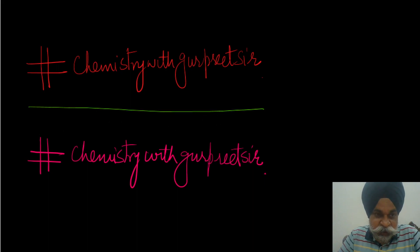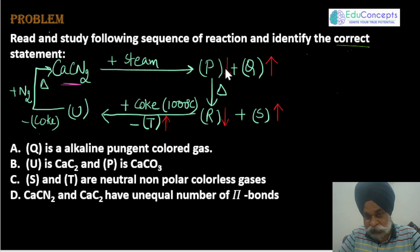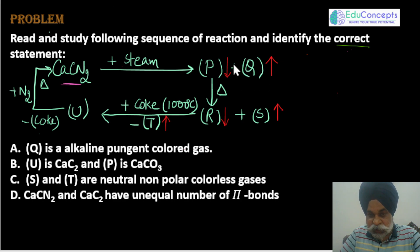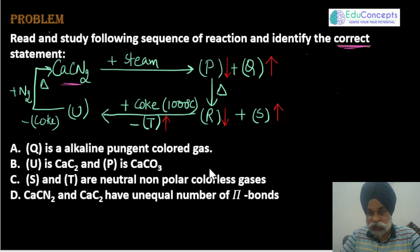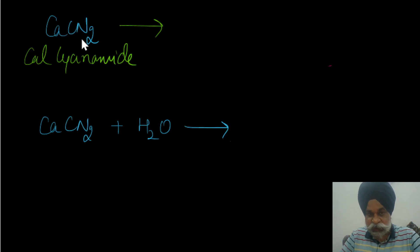Here comes the question. You are given calcium cyanamide which is treated with steam to give products P and Q. The downward arrow indicates precipitation and the upward arrow indicates a gas. The question seems easy but you have to interpret it carefully to identify the correct answers from the four options. My approach is always to first find out P, Q, R, S, T, U, V — whatever is asked — and then look at the options.